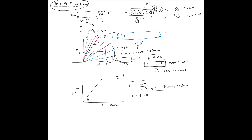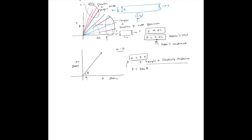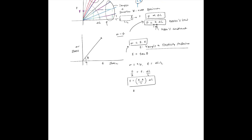Using sigma equals E times epsilon, and substituting sigma equals F over A and epsilon equals delta L over L, we get F over A equals E times delta L over L, which rearranges to F equals (E times A over L) times delta L. Comparing this with Hooke's Law F equals k times delta L, we see that k equals E times A over L. So if you know the Young's modulus E, the cross-sectional area A, and the original length L, you can find the spring constant for that specimen.